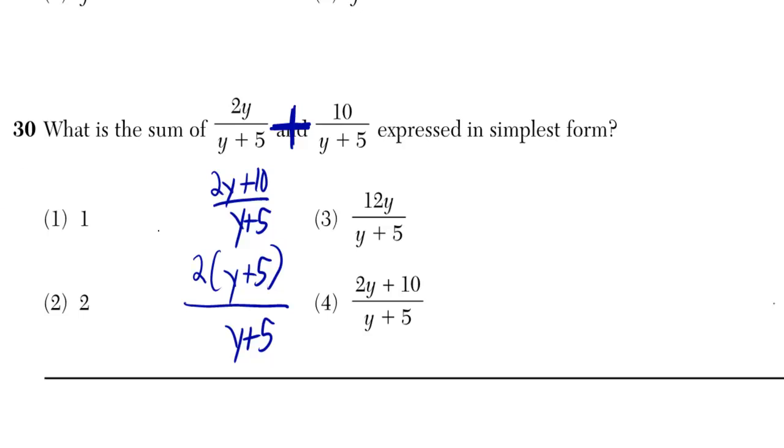But at this point, now that we factored 2 out of there, and we got a y plus 5 factor, well, we also have y plus 5 on the bottom, and those cancel out.